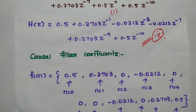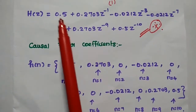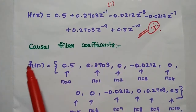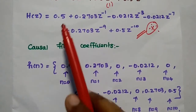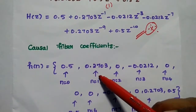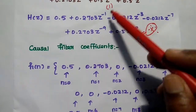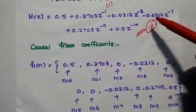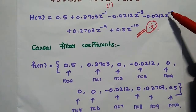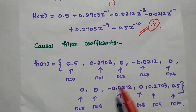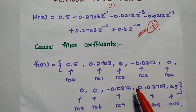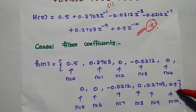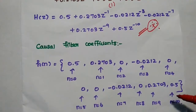From the transfer function, we can write the causal filter coefficients. The constant term represents n = 0. The final realized filter coefficient H(n) is: H(0) = 0.5, H(1) = 0.2703, H(2) = 0, H(3) = −0.0212, H(4) = 0, H(5) = 0, H(6) = 0, H(7) = −0.0212, H(8) = 0, H(9) = 0.2703, H(10) = 0.5. This is the complete filter coefficient of the FIR filter.